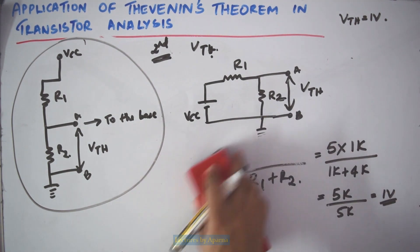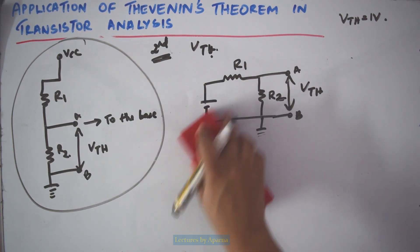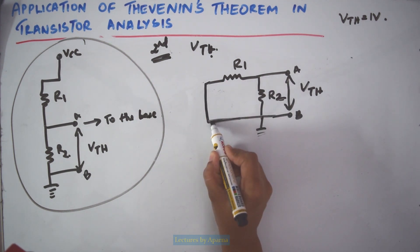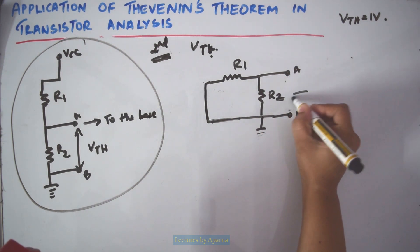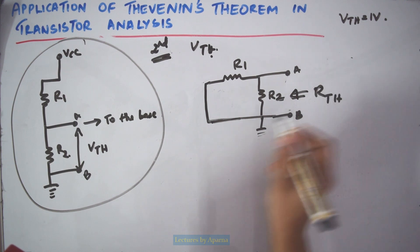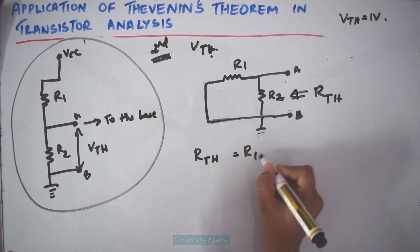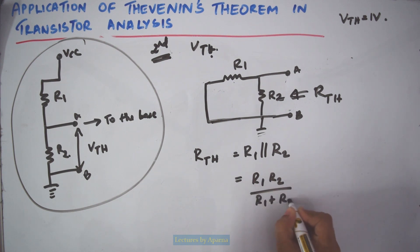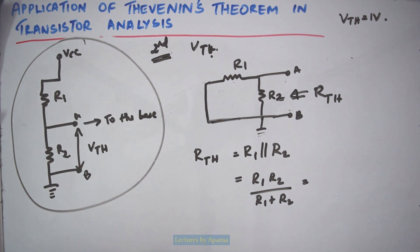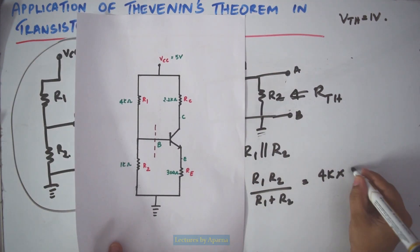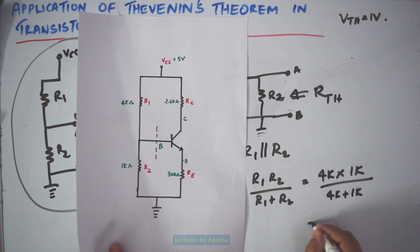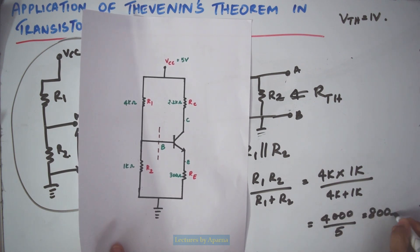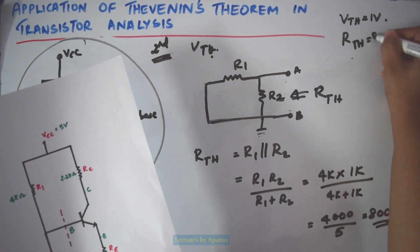Now I have to find RTH. RTH can be obtained by replacing the voltage source by a short circuit. By looking from this side, the effective resistance is RTH = R1 parallel to R2 = R1×R2 / (R1+R2) = 4k × 1k / (4k + 1k) = 4000 / 5k = 800 ohm. So RTH is 800 ohm.